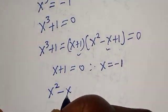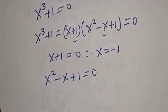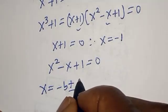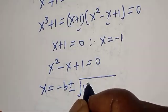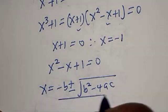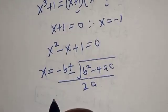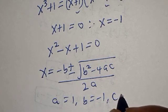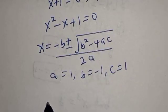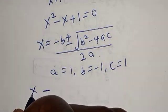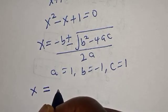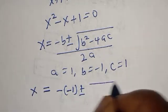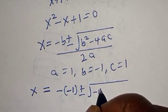For the second case, s squared minus s plus 1 equals 0, which is a quadratic equation. Let's solve using the quadratic formula: s equals minus b plus or minus square root of b squared minus 4ac, over 2a. Here a equals 1, b equals minus 1, c equals 1.